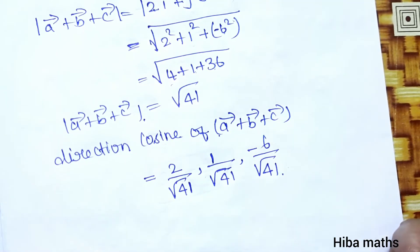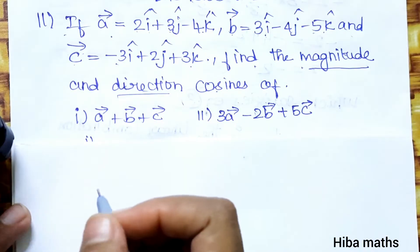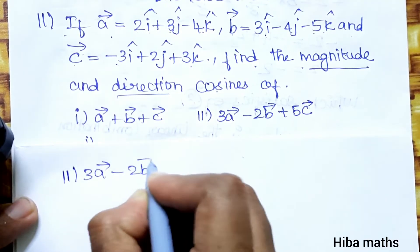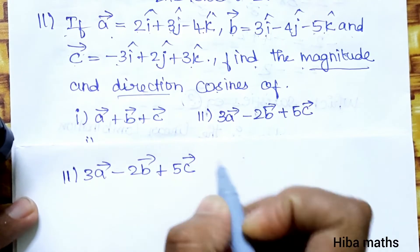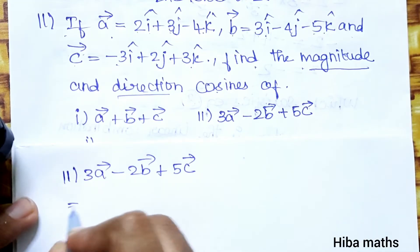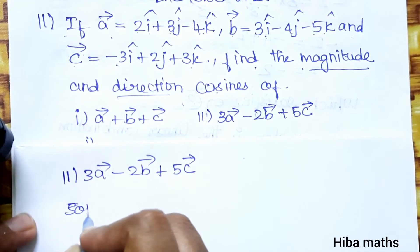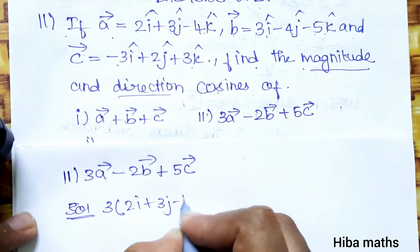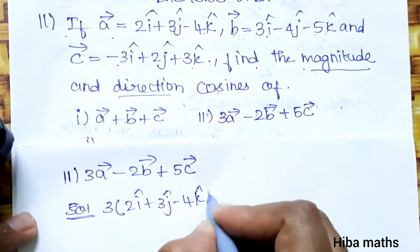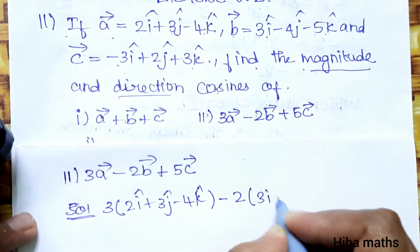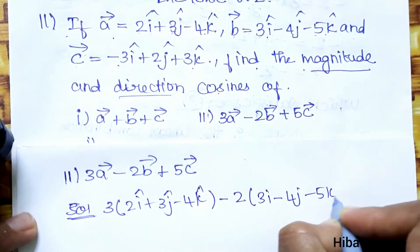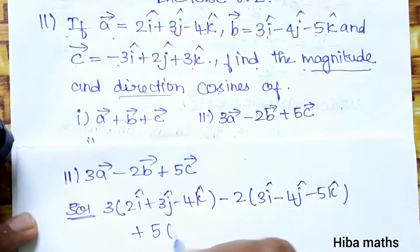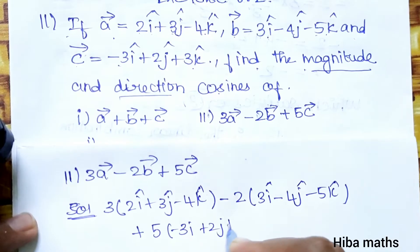Now for the second sub-question: 3a − 2b + 5c. Substituting the values for a, b, and c: a = 2i + 3j − 4k, b = 3i − 4j − 5k, c = −3i + 2j + 3k.